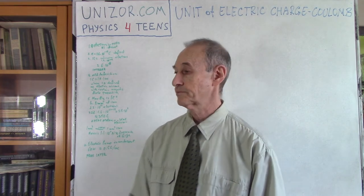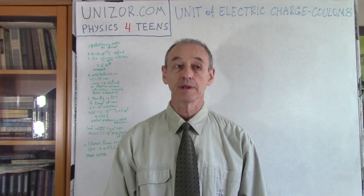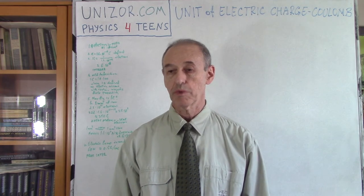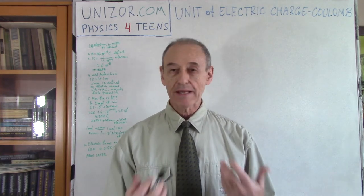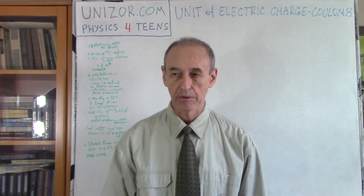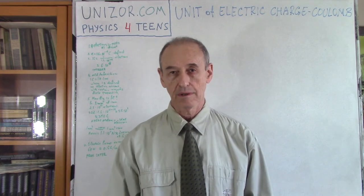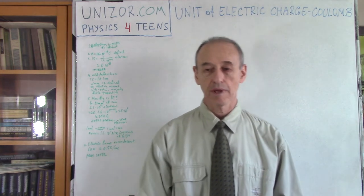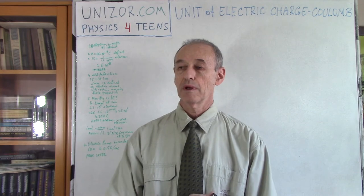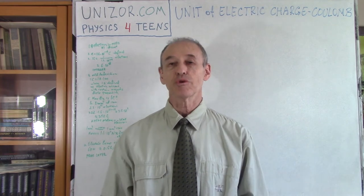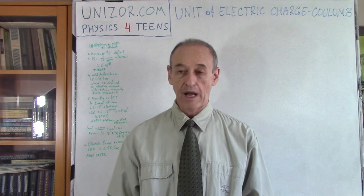The previous lecture was explaining what electrons are actually doing — they carry the electricity — and now we are talking about how to measure it. So, how to measure the amount of electricity, the electric charge. Let me start from the end, if I may. Right now, with all the knowledge we have, especially the fact that it's electrons which carry electric charge and they may be in excess or in deficiency which makes negative or positive electric charge — what's the most natural way to measure electric charge but to count the number of electrons?